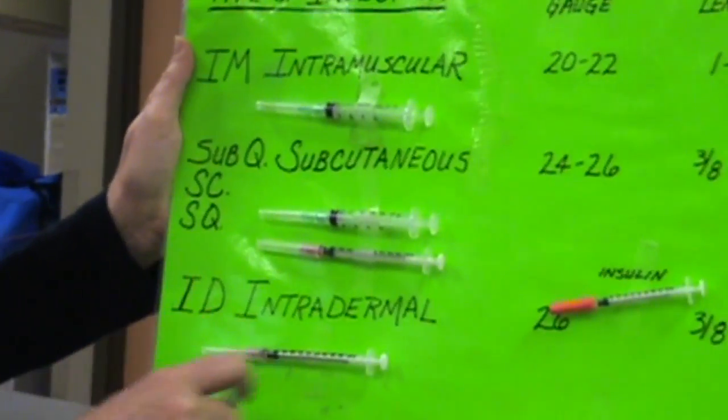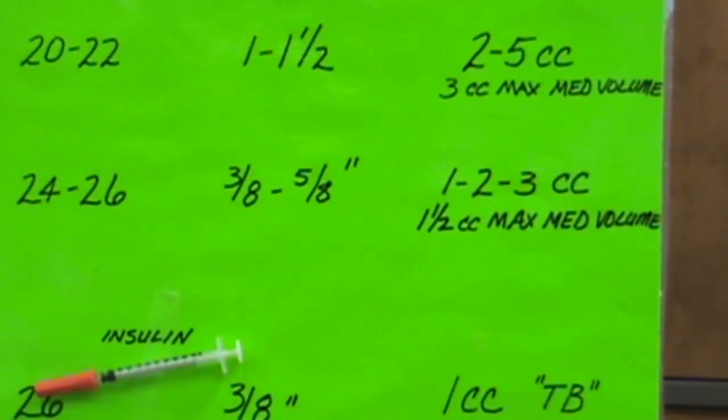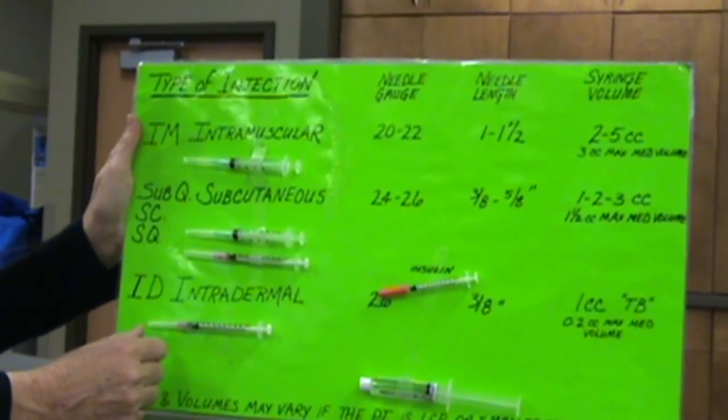Subcutaneous is next. We'll look over here, the syringe volumes are one, two, and three cc syringe. So it's more superficial than the IM, and it's less medicine that can go in.